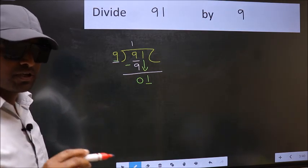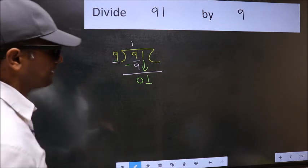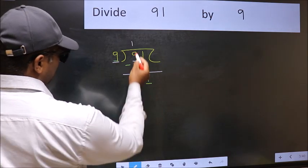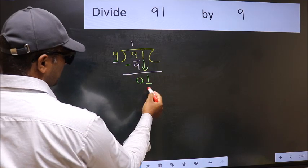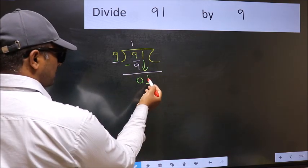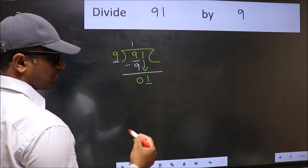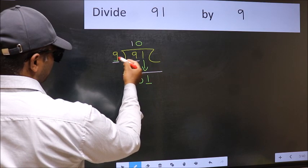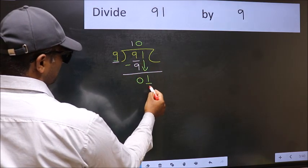Instead, which number should we take here? If I take 1, we will get 9, but 9 is larger than 1. So what we should do is take 0. So 9 into 0, 0.